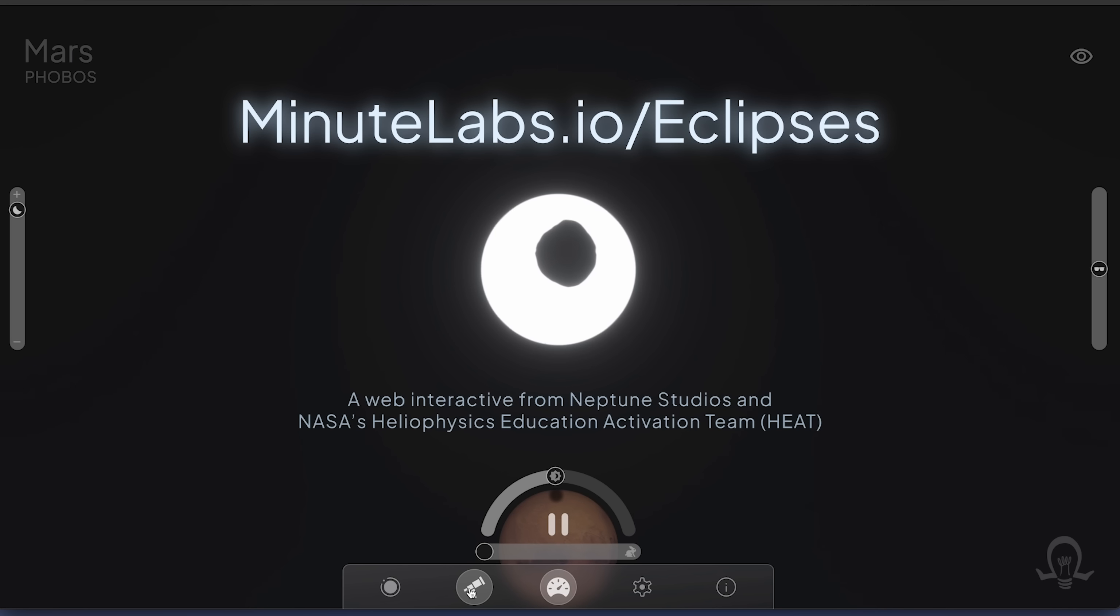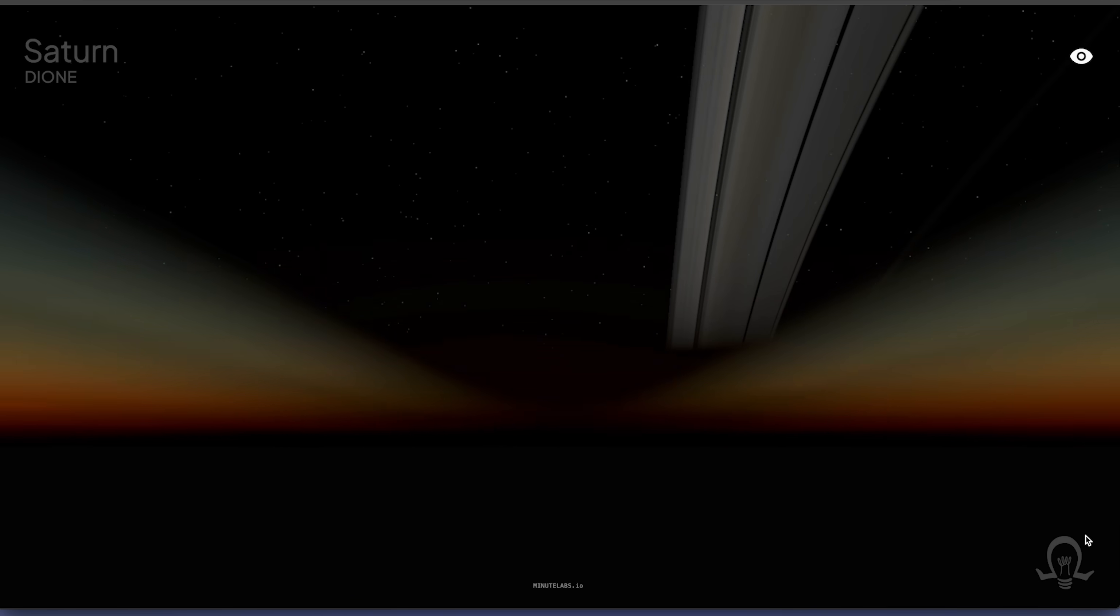The visuals on this t-shirt and in the video of what eclipses might look like on other planets came from MinuteLabs. Go to minutelabs.io slash eclipses to explore for yourself what eclipses might look like on Mars, Jupiter, Saturn, Uranus, and Neptune.